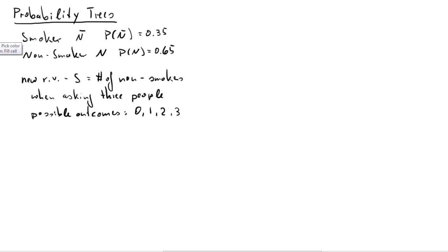To repeat, the probability for being a non-smoker is 65%, the probability for being a smoker, that's p n bar, is 35%. If we want to create a probability tree we will basically think of different levels of this new random variable. We will basically pick one after the other, the first, the second and the third respondent.